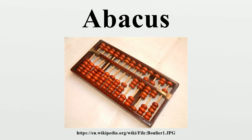The earliest archaeological evidence for the use of the Greek abacus dates to the 5th century BC. Demosthenes talked of the need to use pebbles for calculations too difficult for your head. A play by Alexis from the 4th century BC mentions an abacus and pebbles for accounting, and both Diogenes and Polybius mention men that sometimes stood for more and sometimes for less, like the pebbles on an abacus. The Greek abacus was a table of wood or marble, preset with small counters in wood or metal for mathematical calculations. This Greek abacus saw use in Achaemenid Persia, the Etruscan civilization, and ancient Rome, until the French Revolution.